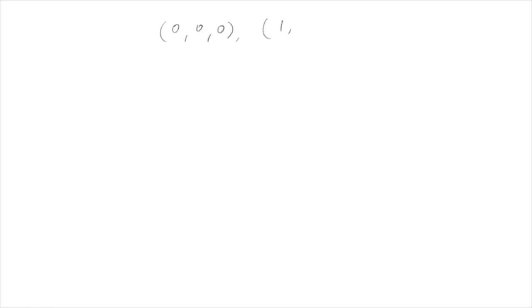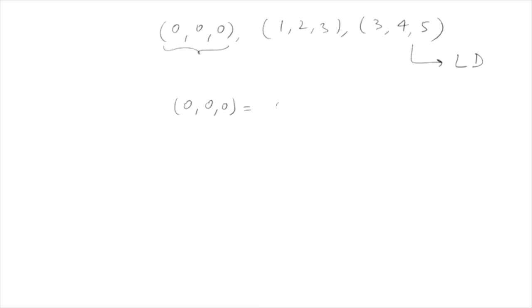Next example: the set {(0,0,0), (1,2,3), (3,4,5)}. This set is clearly linearly dependent because the zero vector (0,0,0) can always be expressed as 0×(1,2,3) + 0×(3,4,5) — that is, one vector in the set can be expressed as a linear combination of the remaining vectors, so the set is LD.